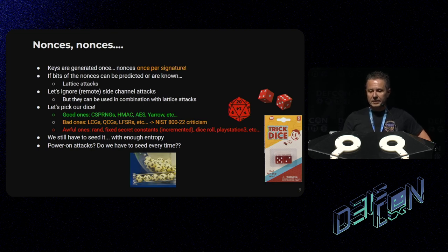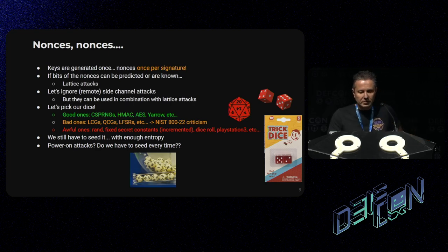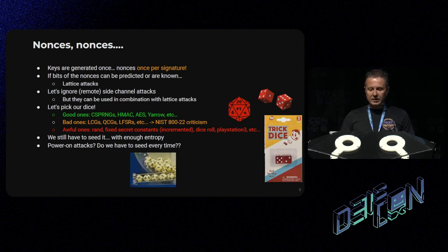The takeaway is that you're essentially performing key generation for every signature. And if the nonces can be predicted or some bits are known, then you can use lattice attacks. You can also use side-channel attacks in combination with lattice attacks to retrieve the key. So what you have to choose to generate the randomness is to choose your dice. There are good dice like RNGs based on cryptographic algorithms like HMAC and AES. And then you have bad ones like algebraic generators, LFSRs. And then there are awful ones like fixed secret constants and rand functions.